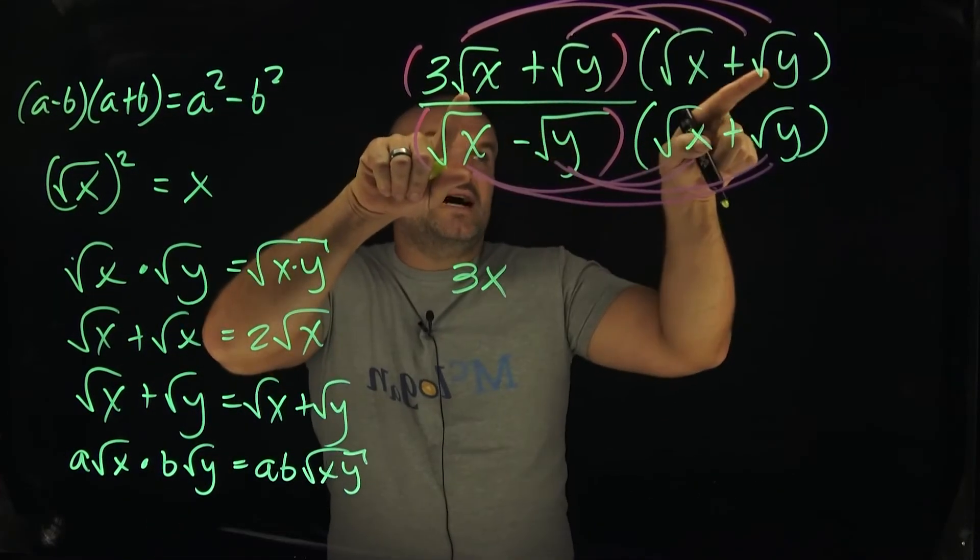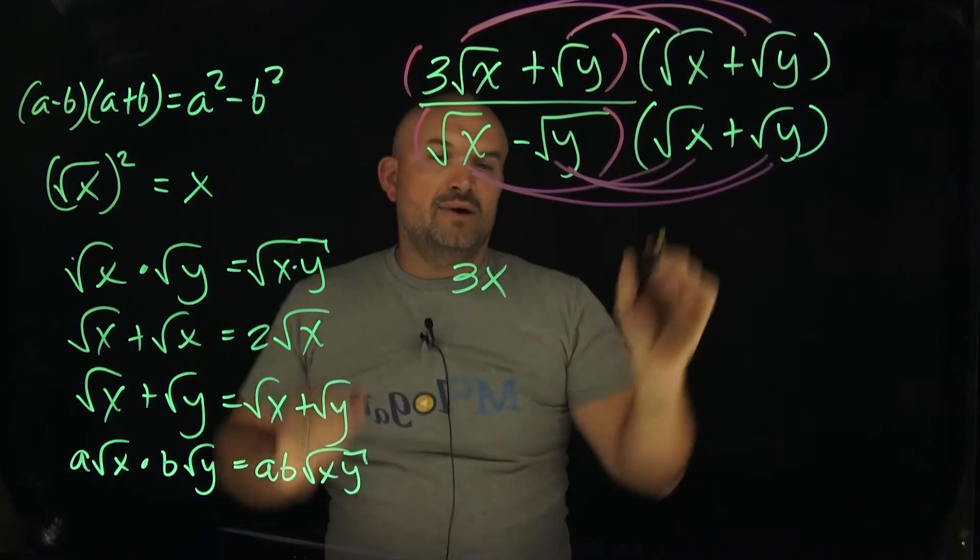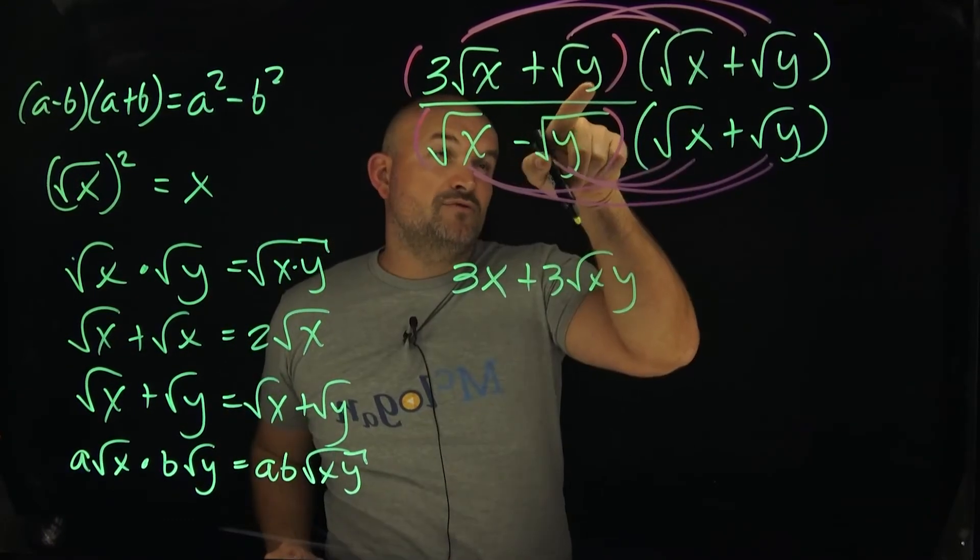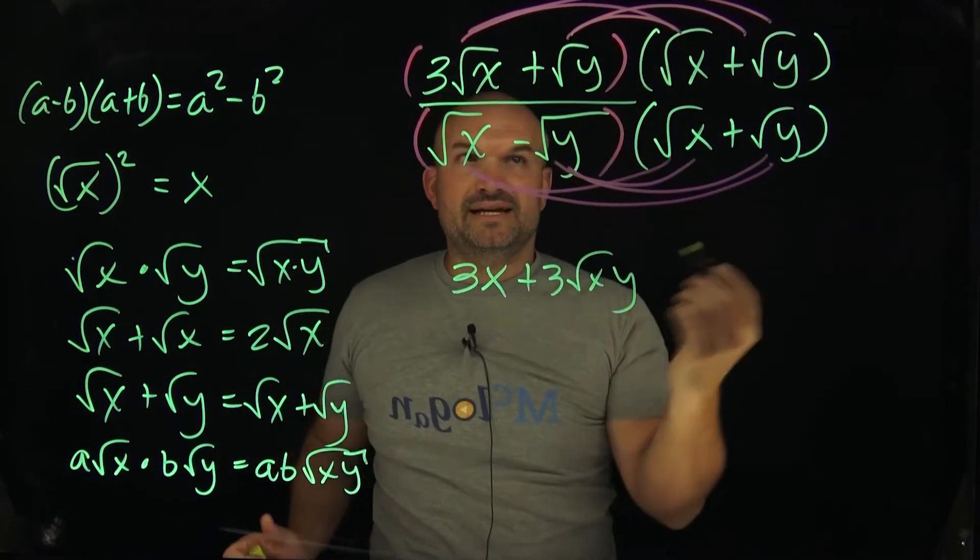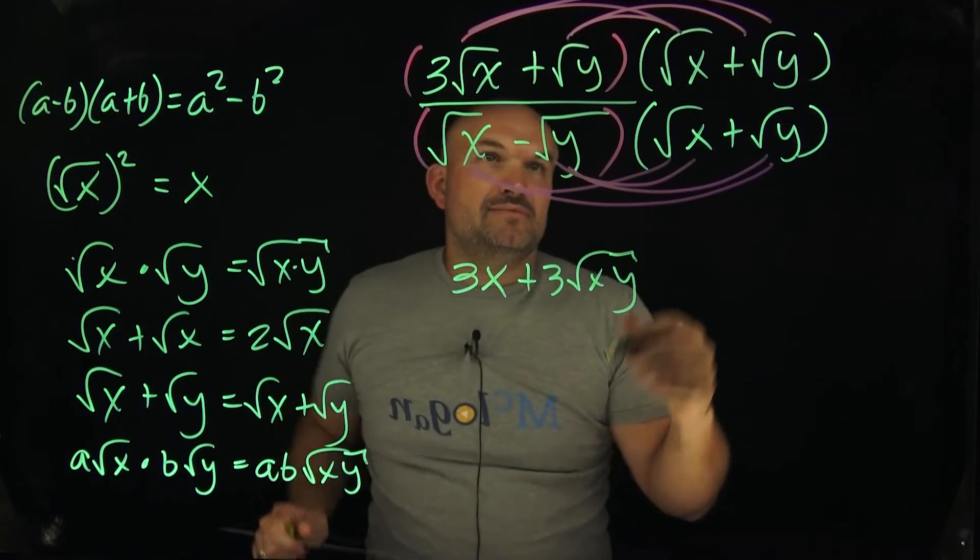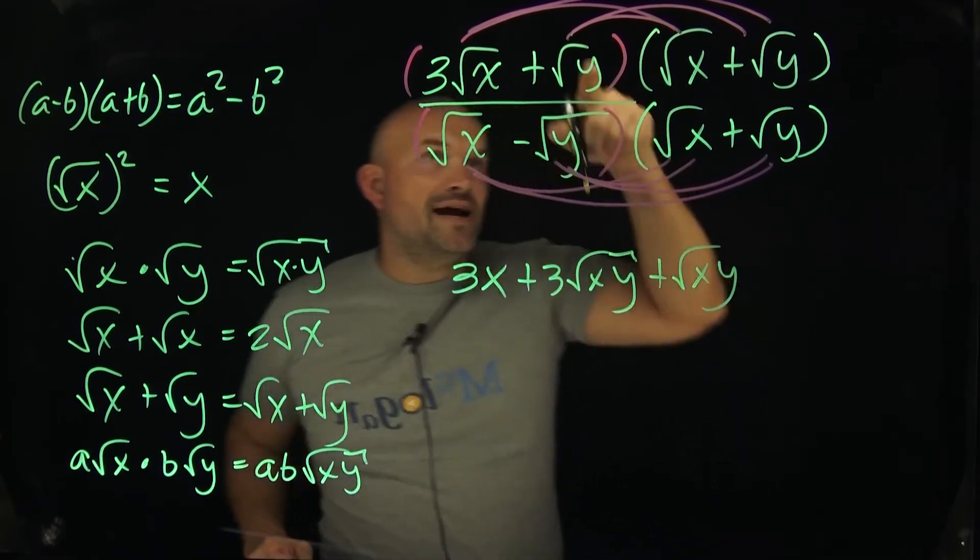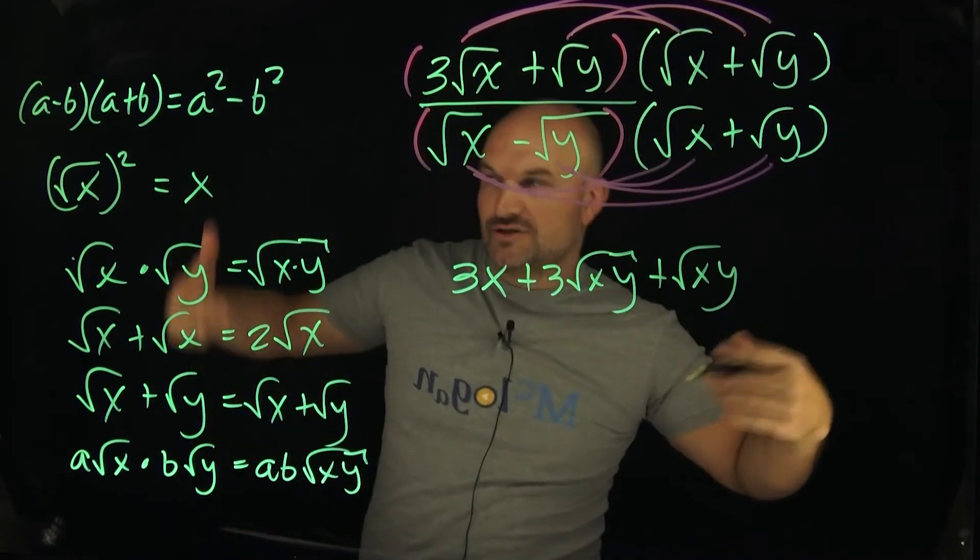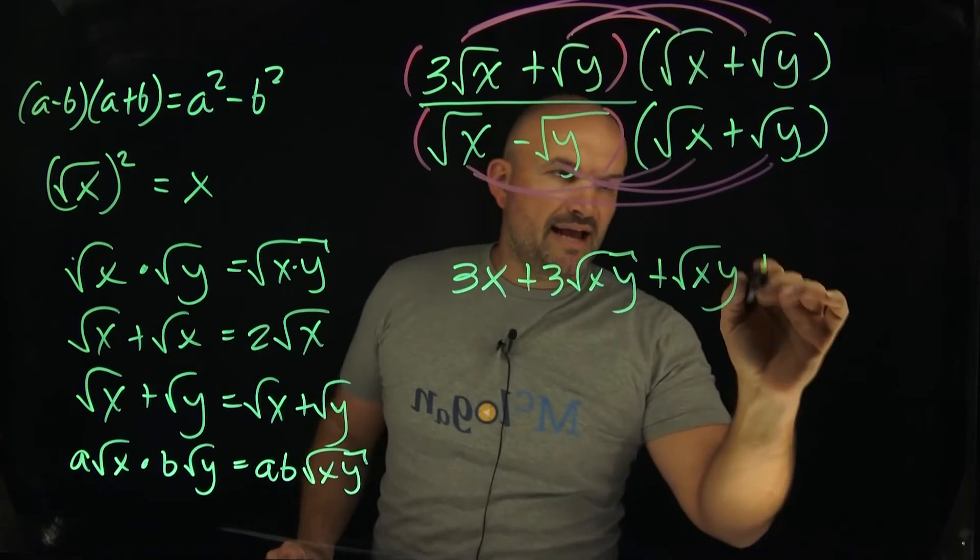Then I have three square root of x times the y. So I'm going to multiply the x and the y. Here, I have square root of y times the square root of x. So therefore, that's going to be y times x. Or if you want to have them the same, which a lot of times students do, I'll just rewrite it as x times y. And then I have square root of y times square root of y, which again is going to be the square root of y squared, which is just going to be y.